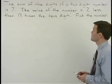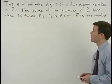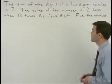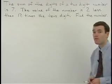The sum of the digits of a two-digit number is seven. The value of the number is two less than twelve times the tens digit. Find the number.